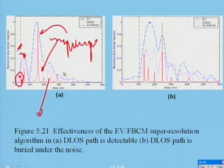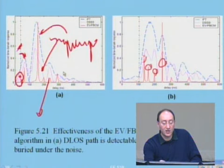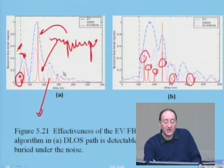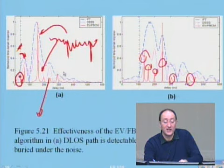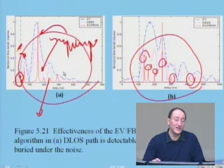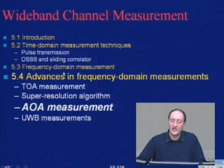Super-resolution resolves all the paths. For telecommunications and RMS delay spread it's not critical, but for geolocation applications it's very important — and it has picked up a lot of attention in the past 2–3 years. The technique adapts spectral estimation algorithms, developed over the past 20 years, to our specific channel measurement problem.